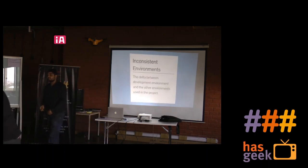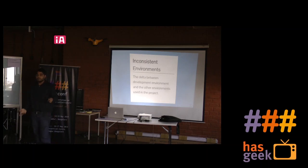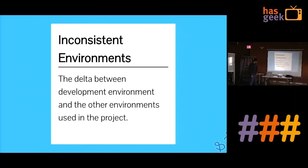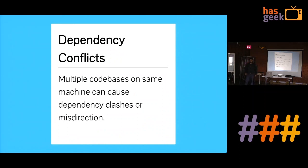Then there are inconsistent environments. There will always be a difference between your developer environment and CI, staging, QA, or any other environment you use. This means a lot of unexpected errors — you might work on something that works on your machine, push it, and it might fail. The 'works on my machine' phrase is very hard to eliminate, but you can work towards cutting it down a lot.